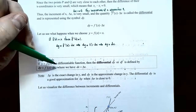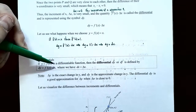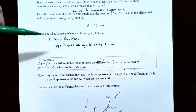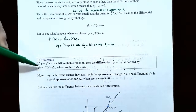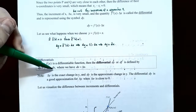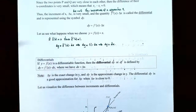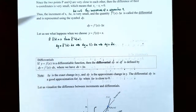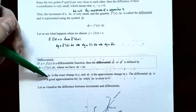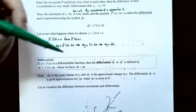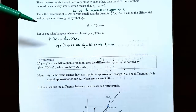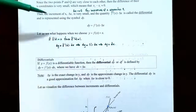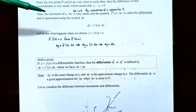Let's talk about the definition of differentials. If y equals f of x is a differentiable function, the differential dy — sometimes written df — is defined by the formula: dy equals f prime of x times dx, where dx and delta x are the same. Delta y is the exact change in the y values, but this formula lets you use the derivative to approximate how much the y values change, which may be faster.